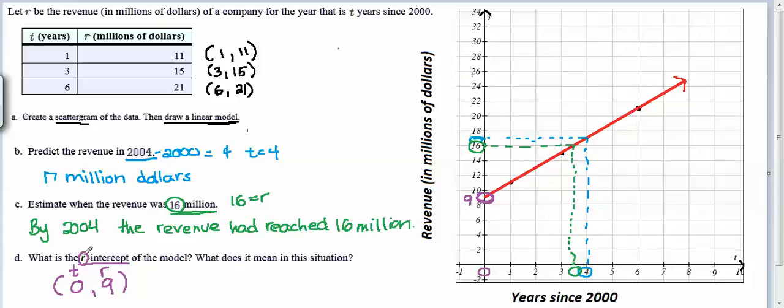So if it's the r intercept then the r coordinate will have a non-zero value and the other coordinate will have a 0 value. Now we need to interpret what does it mean.